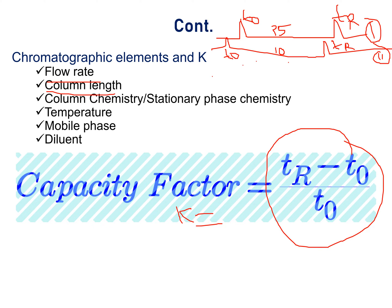But finally, capacity factor, which is Tr minus T0 divided by T0, will remain the same for both 25 cm column as well as 10 cm column. Hence, we can say that capacity factor is not affected by length of the column.